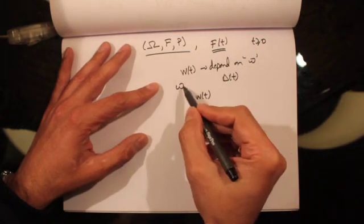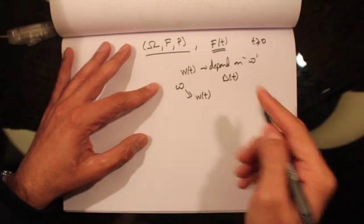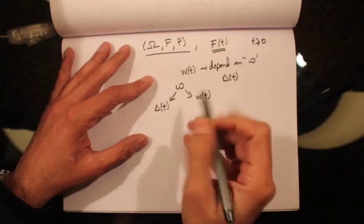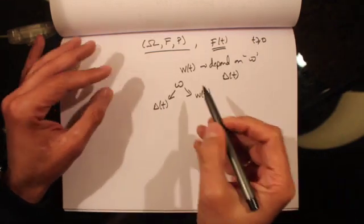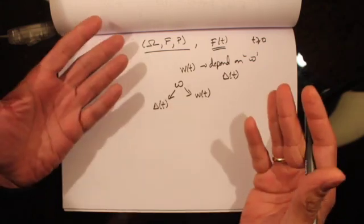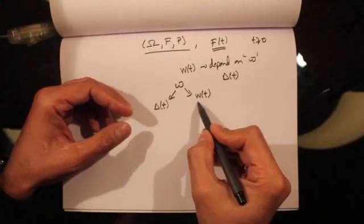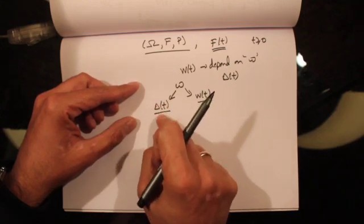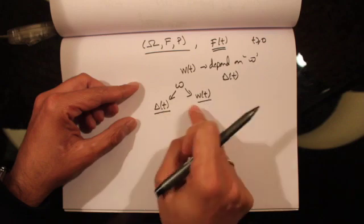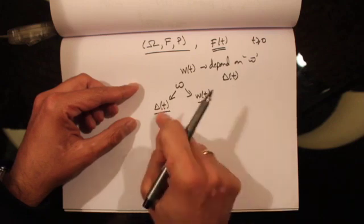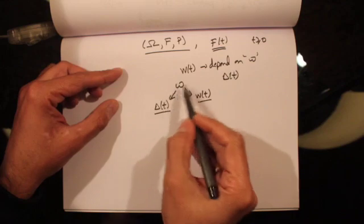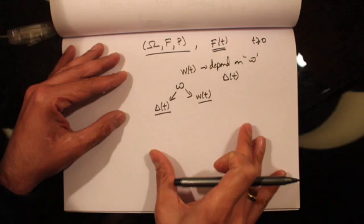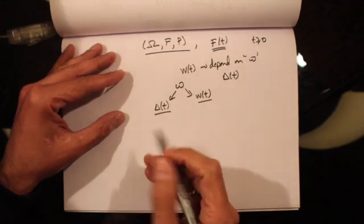So again, we conduct an experiment, get some value of omega, and depending on omega we get a path of Brownian motion and also a path of the adapted stochastic process. If we conduct the experiment again, we'll get a different path of Brownian motion and a different path of the adapted stochastic process. Both are stochastic processes that depend on the outcome of the experiment.